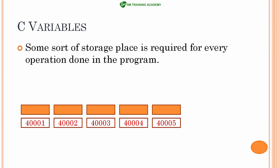Assume that these are the 5 memory locations I am having. Now I want to perform the simplest form of mathematical operation — addition of two numbers. I will be storing the first operand in memory location 4001, the second operand in memory location 4002, and I will use memory location 4003 for storing the result. So for performing even the simplest addition operation, I am requiring three memory locations by default.